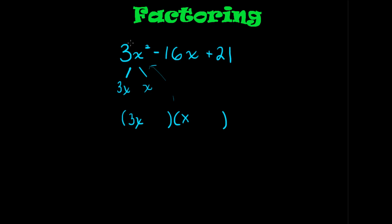The next thing I like to do is look at the last term, the constant. In this case it's 21. And I like to break it down into its factors, which in this case will be 7 and 3, or also 21 and 1, which is also an option, so we've got to keep that in mind.